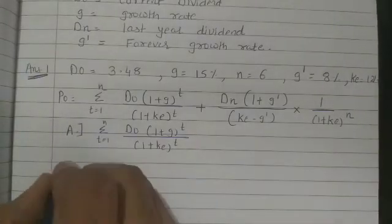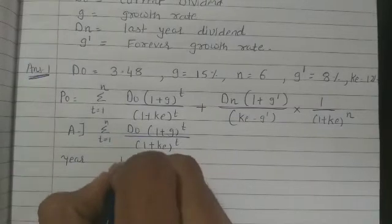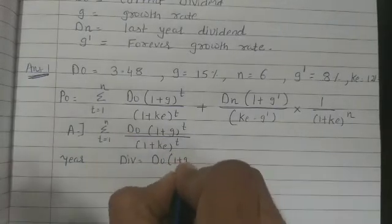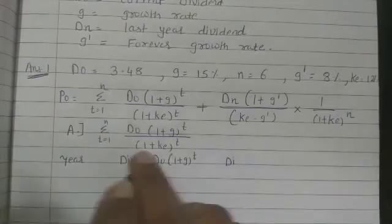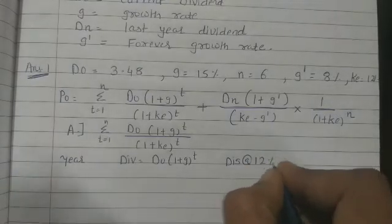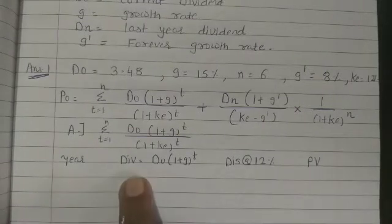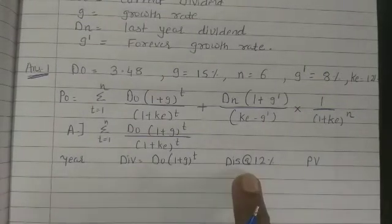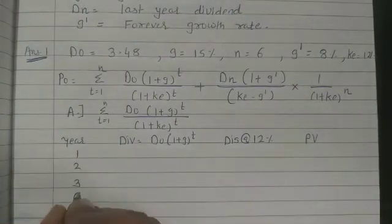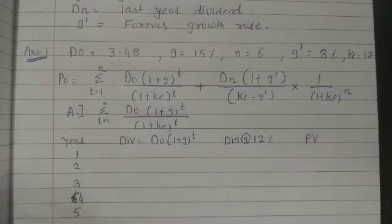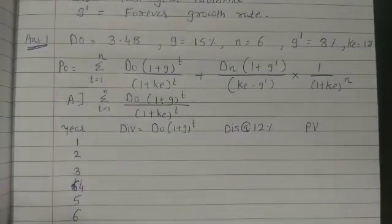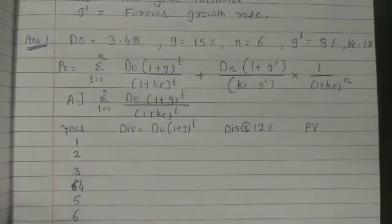The table has columns: year, dividend (which is D0 times 1+G), discount factor (1 upon 1+KE), and present value. For the discount rate, 12% is given as equity capitalization rate. So find the future dividend each year with the 15% growth rate, then discount it at 12% to get the present value. This covers six years.